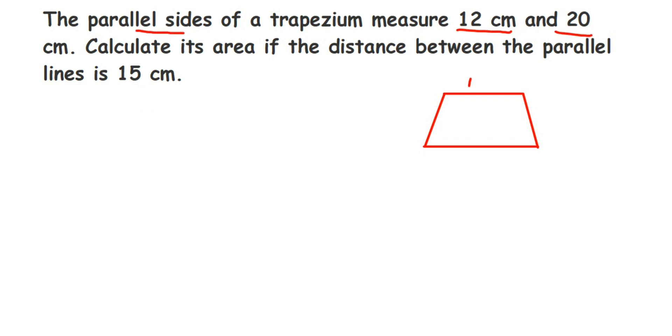Suppose these are the two parallel sides—this line and this line. The first is 12 centimeters, the second one is 20 centimeters. We also have the distance between the two parallel sides, which is 15 centimeters. We have to find out the area of the trapezium.